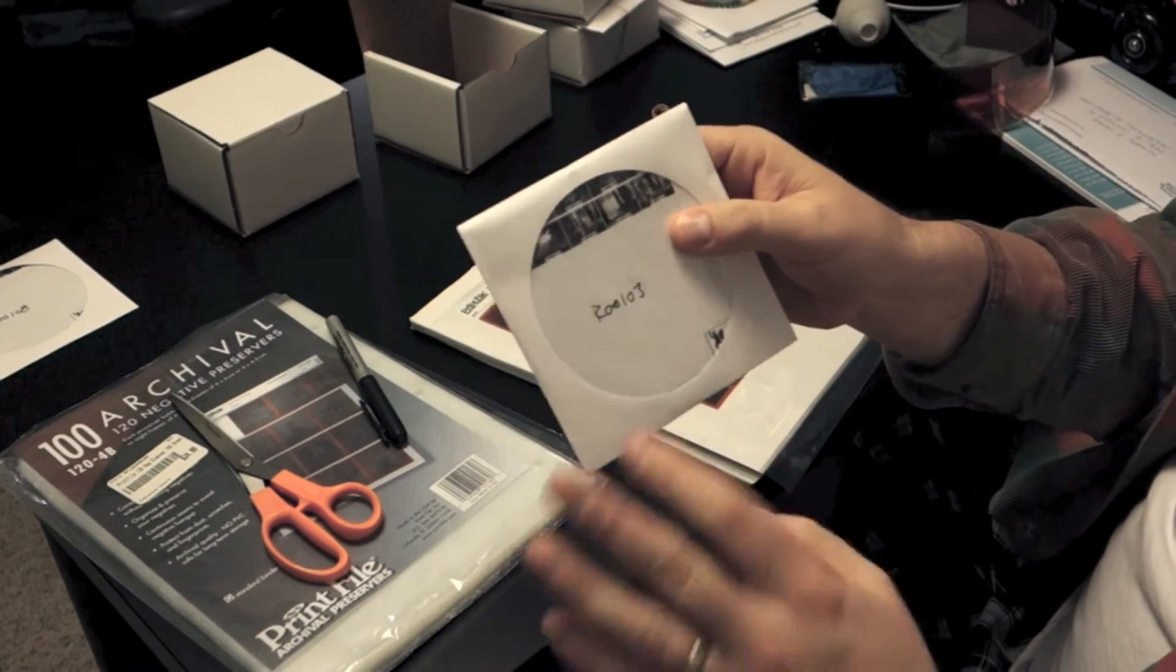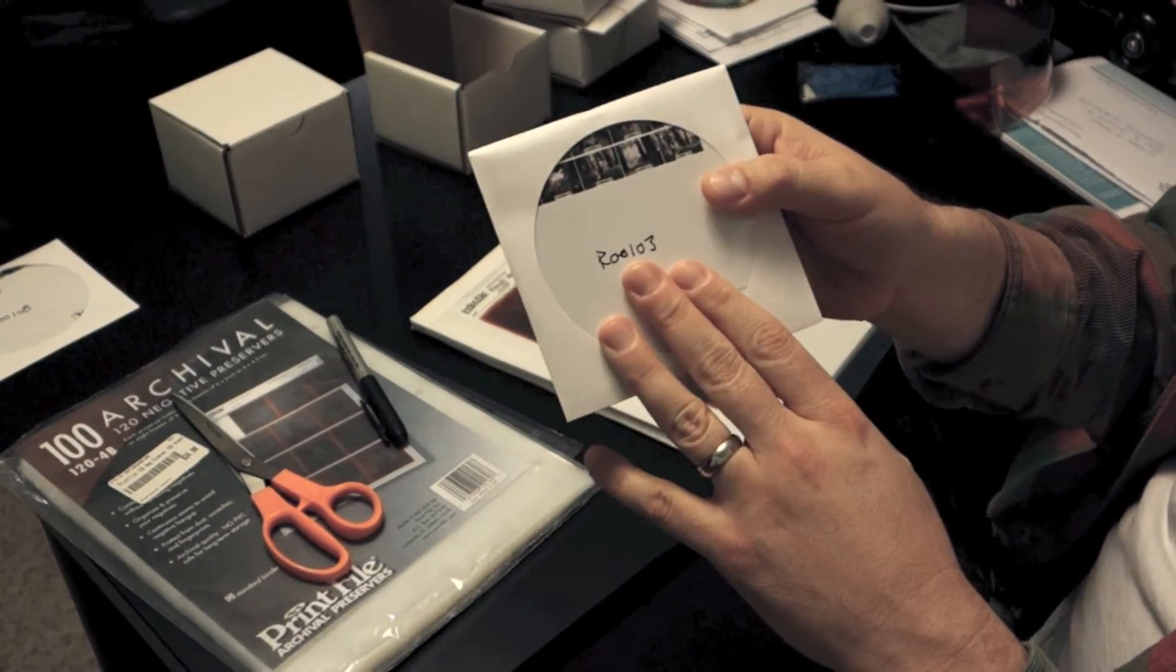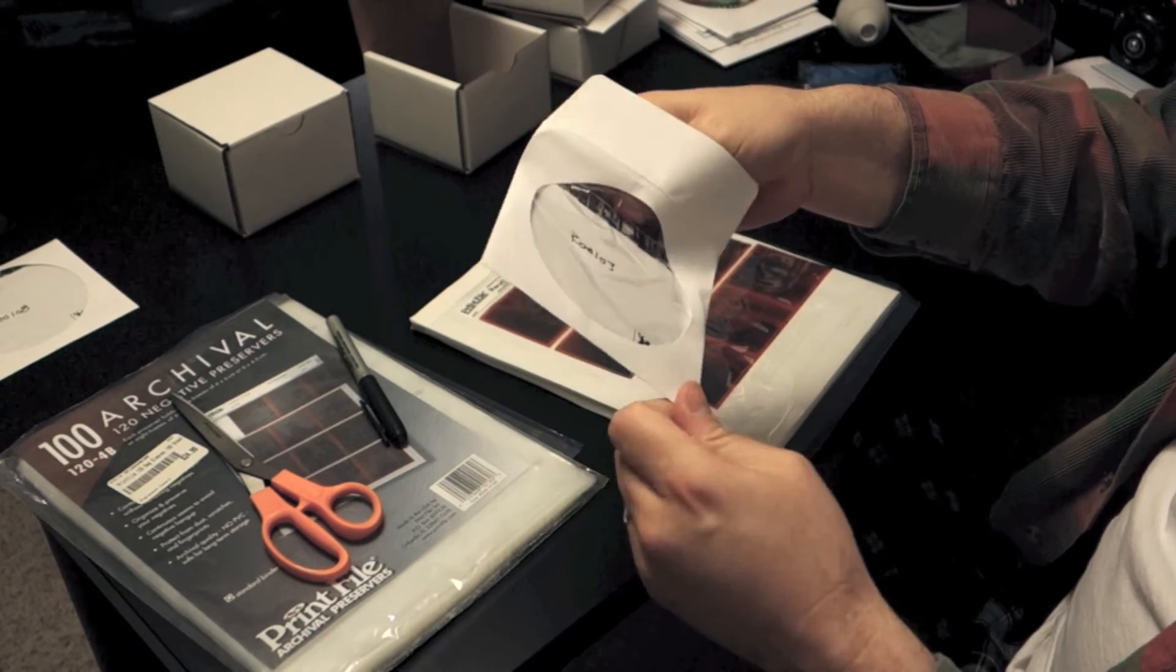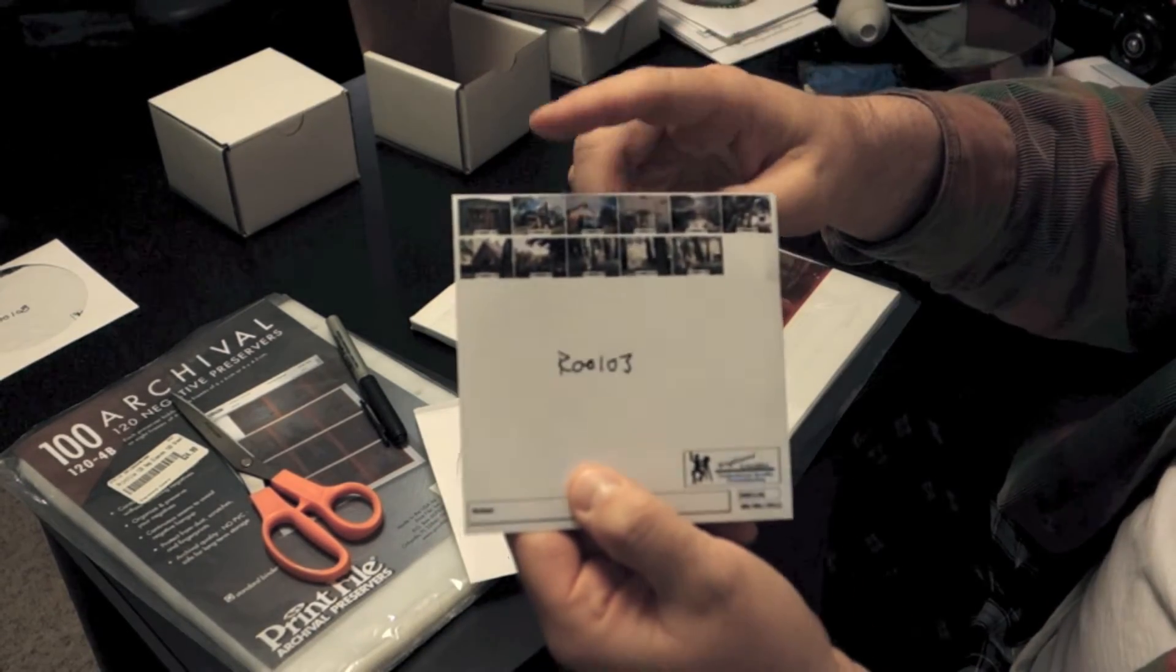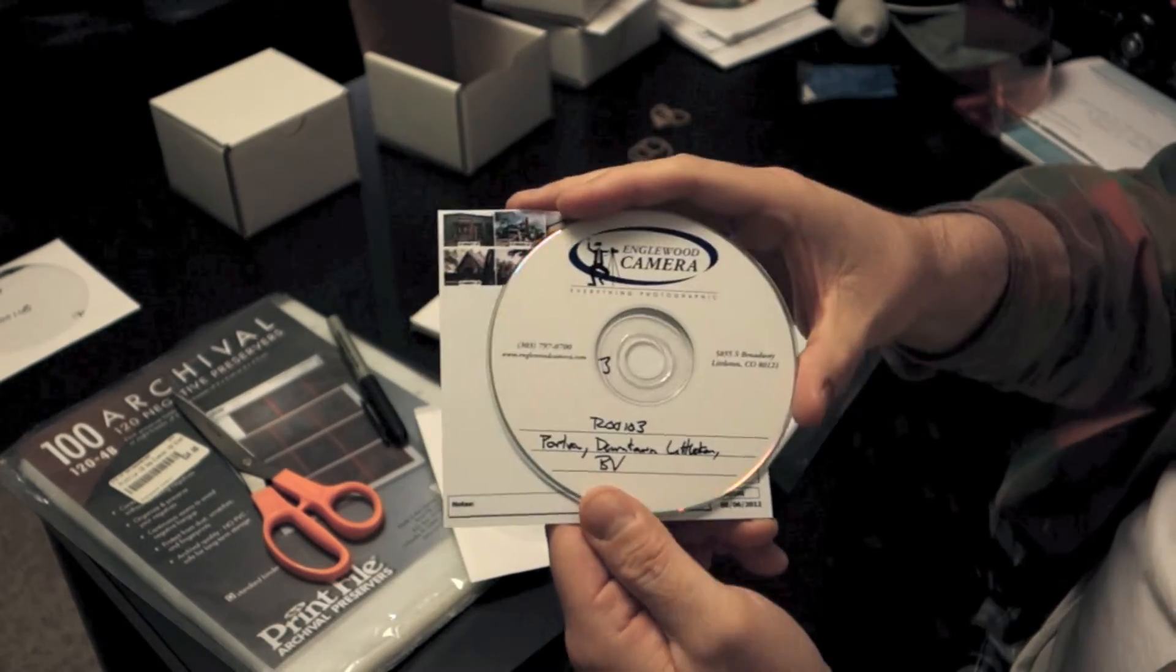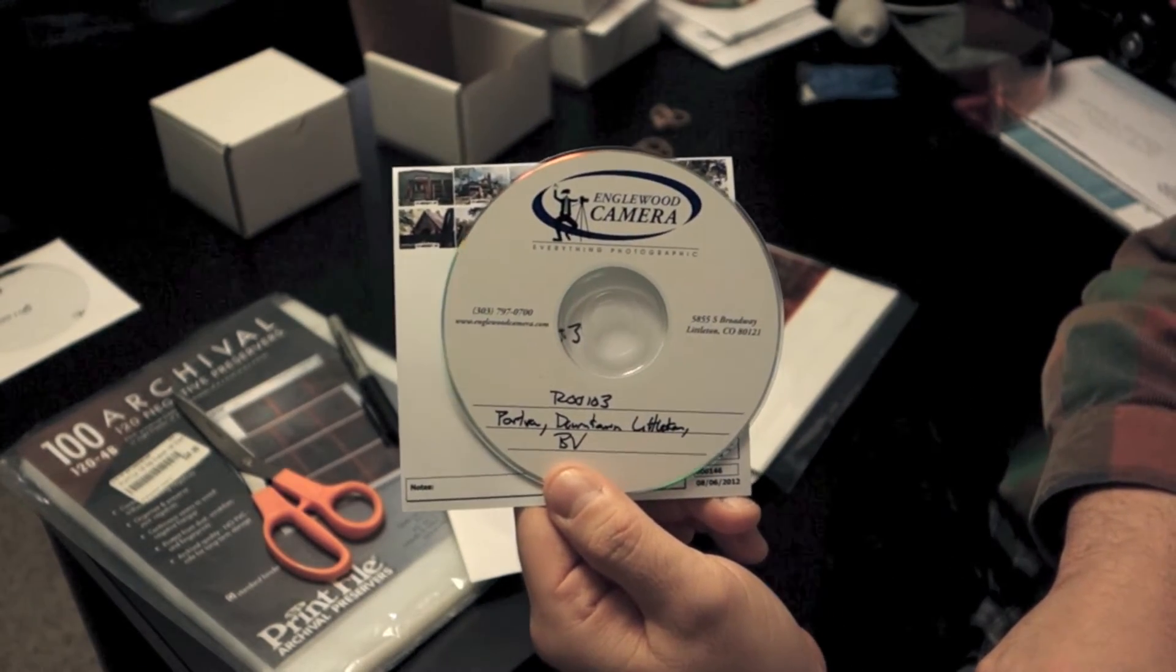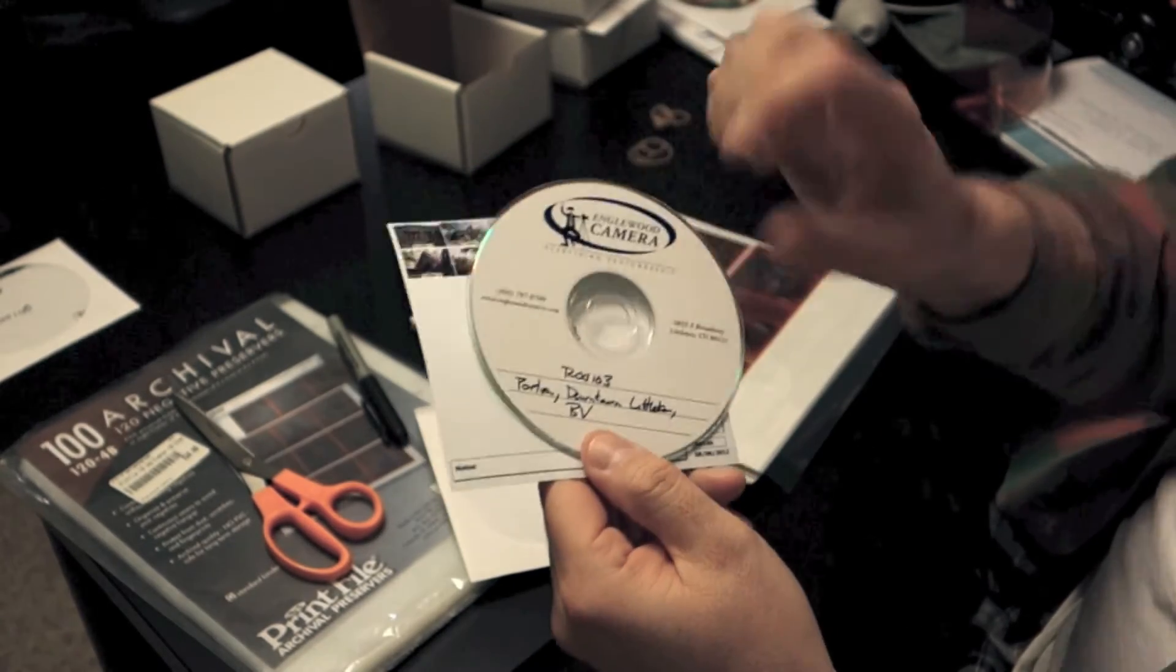Now as part of completing this whole process, I take the CD from my processor, my lab, and I label that with my roll number. So you can see on my thumbnail sheet here, I just write the roll number. And then on the CD, in case it gets separated, I put the roll number and then just a short descriptive text about what's on the CD. So again, this index ties everything together.